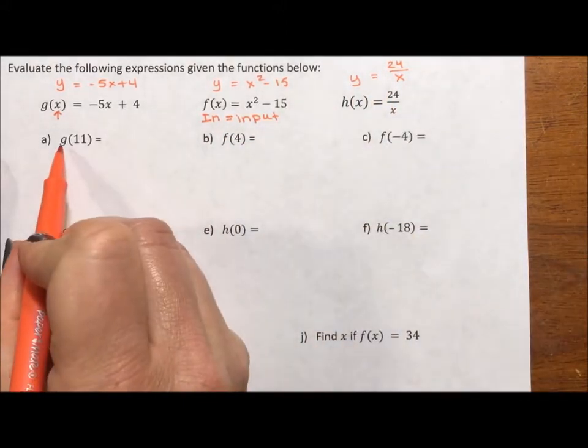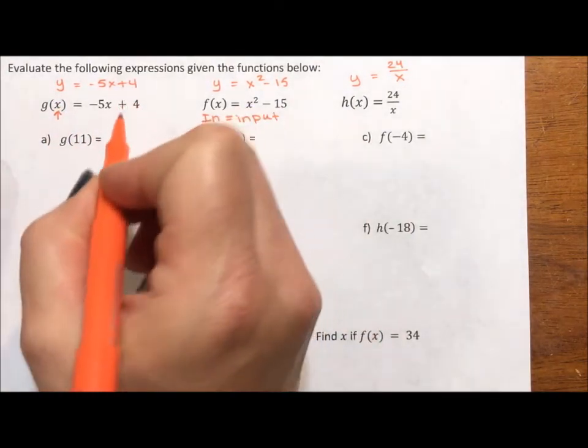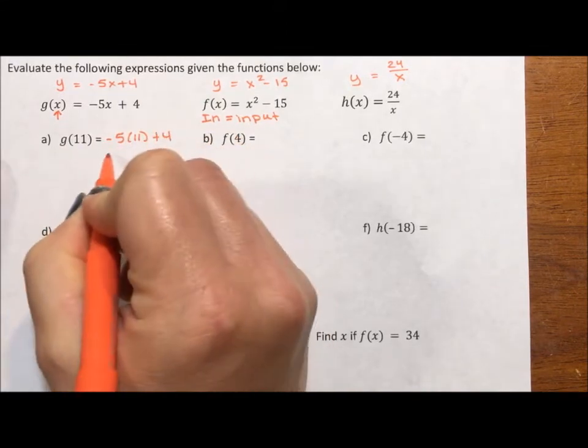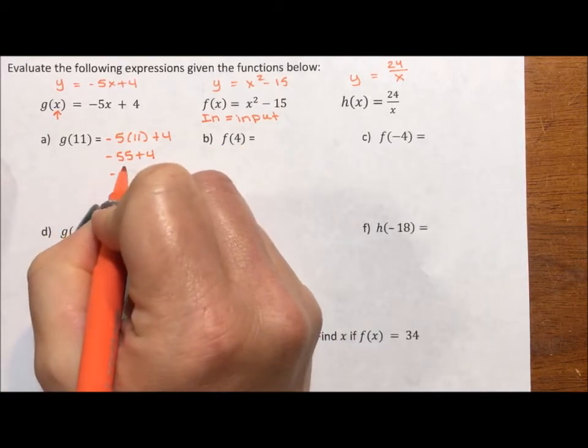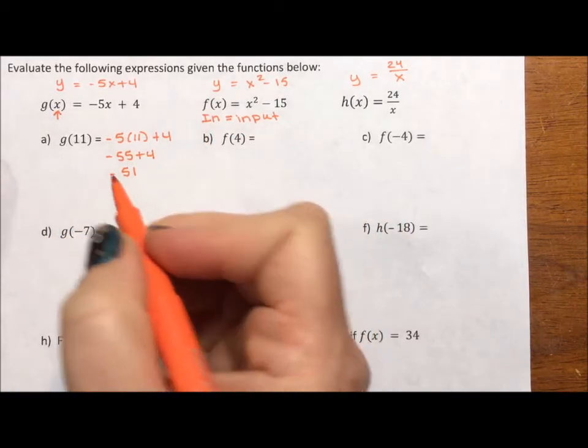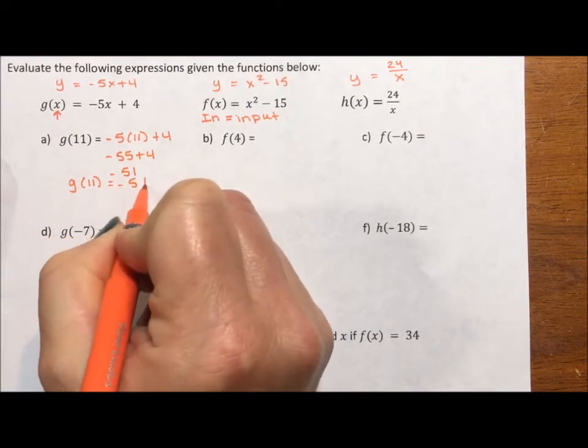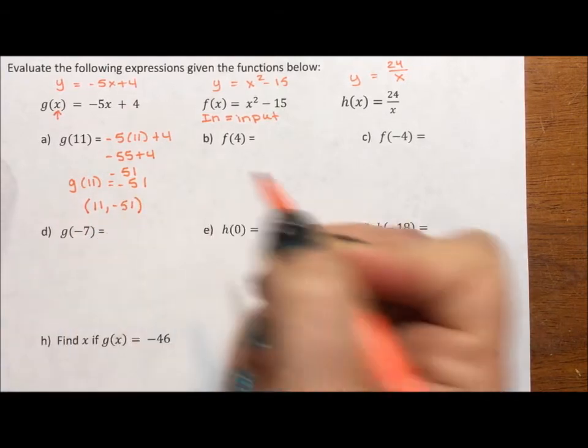This is saying, let's put 11 in for x as the input of g(x). This isn't g times 11. It's -5 times 11 plus 4, which is -55 plus 4, which is -51. So g(11) equals -51, which also means the ordered pair (11, -51) is on the graph.